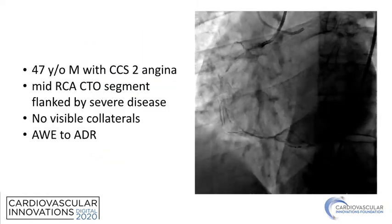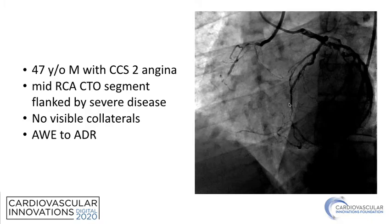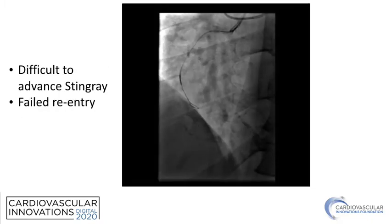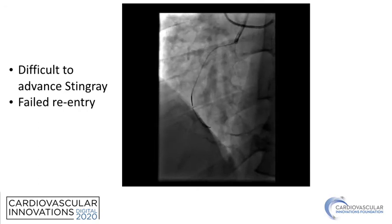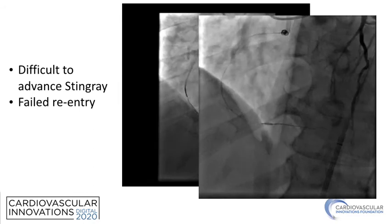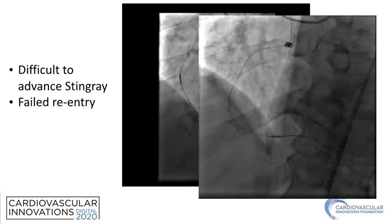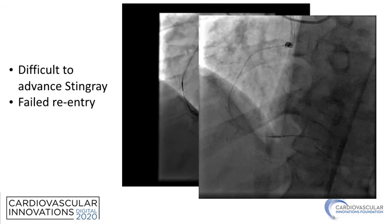Here is another case — a gentleman with symptoms and an RCA CTO flanked by severe disease at both ends. There are some very faint collaterals from the left system, no visible collaterals, so we proceeded with an antegrade wire escalation dissection re-entry approach. There appeared to be a reasonable landing zone distally. We had a very hard time reaching the mid portion of the lesion, but eventually pushed a knuckle distally for dissection re-entry with a Stingray. However, due to extensive dissection and probable hematoma, we were unable to achieve true lumen re-entry with the Stingray. At this point, having used a lot of contrast and radiation, rather than attempting a retrograde approach, we decided to perform STAR.